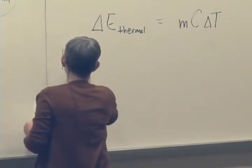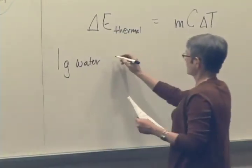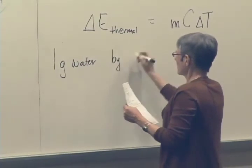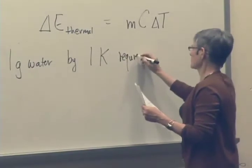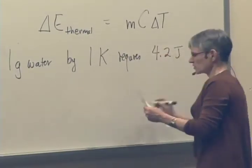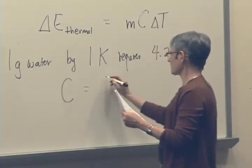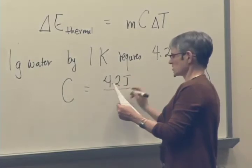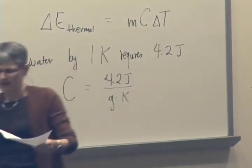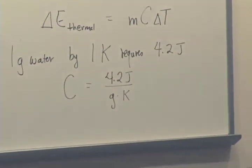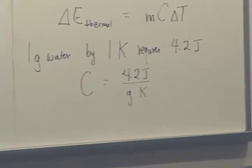For example: to raise one gram of water by one degree Kelvin requires 4.2 joules. So we say the specific heat capacity of water is 4.2 joules per gram per Kelvin. Let's do a back-of-the-envelope calculation to see what this would mean.